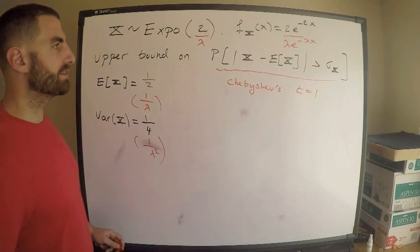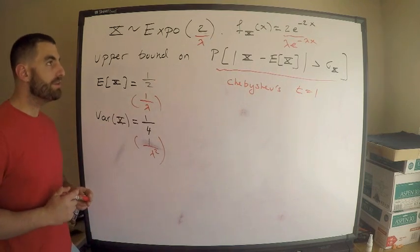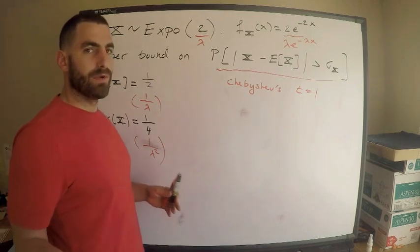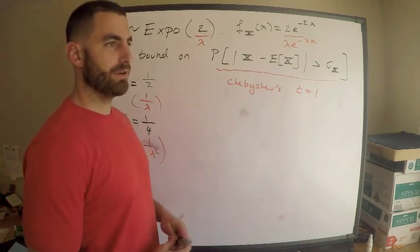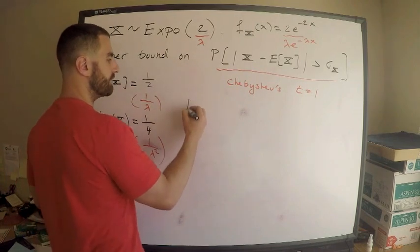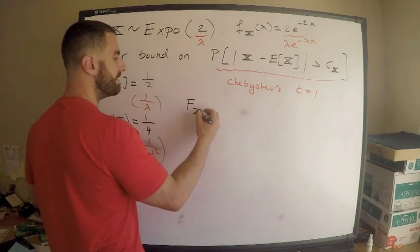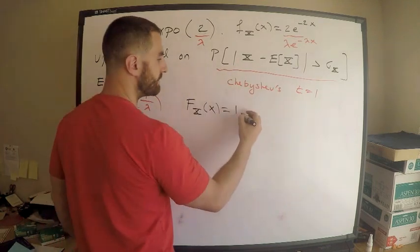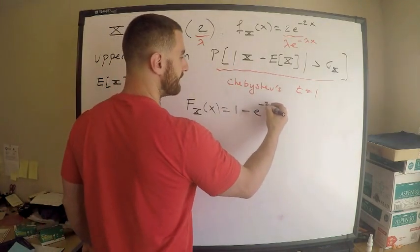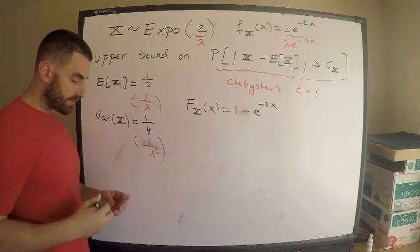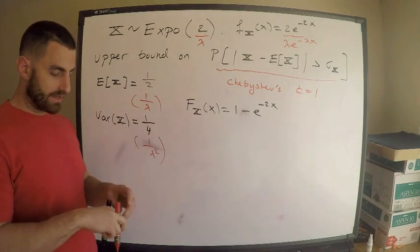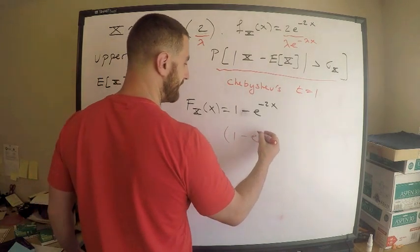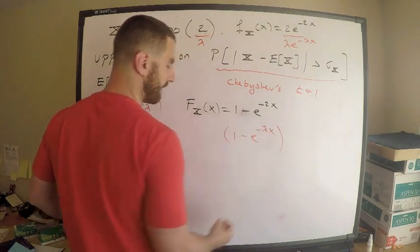The other thing you should know is the CDF — especially to avoid computing integrals with the exponential distribution. The CDF in general is 1 minus e to the negative lambda · x, and for this particular case with lambda equal to two it's 1 minus e to the negative 2x.